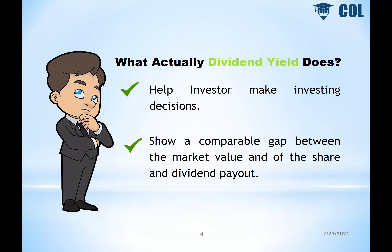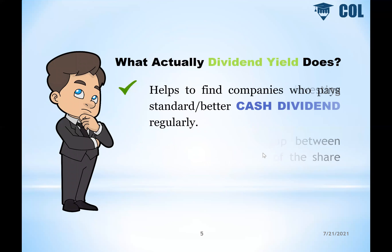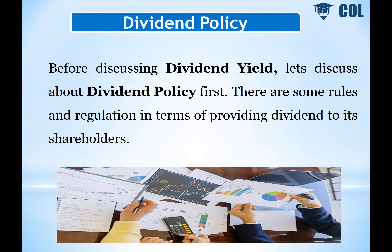Dividend payout has a market price compared for comparability. It helps to find out companies who pay a standard or better cash dividend regularly.